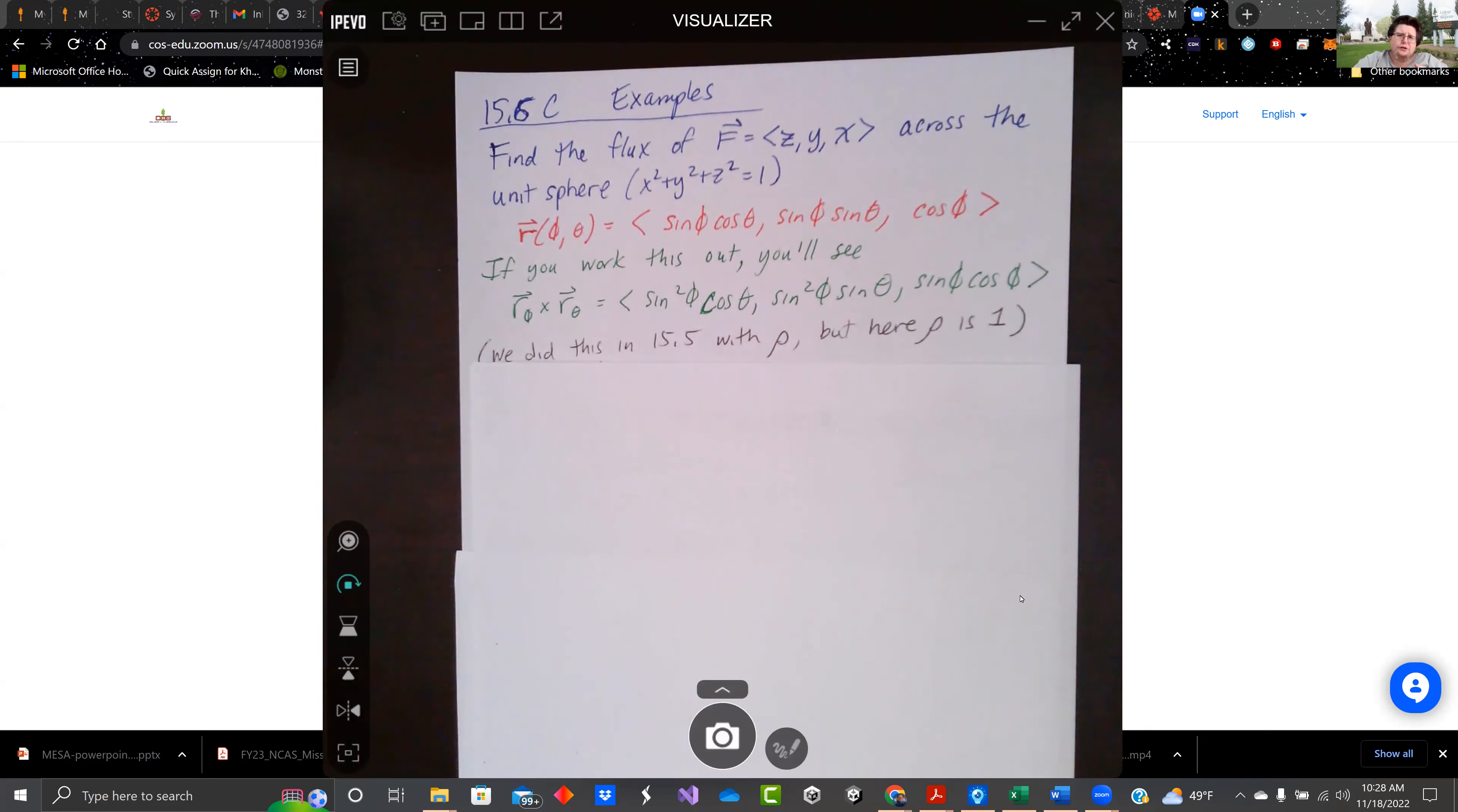The first example is just a one-pager. We're going to find the flux of the force field Z, Y, and X across the unit sphere X squared plus Y squared plus Z squared.